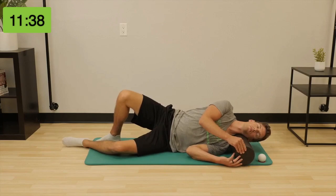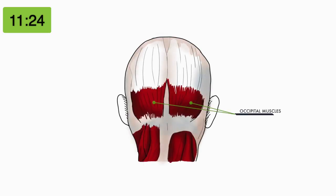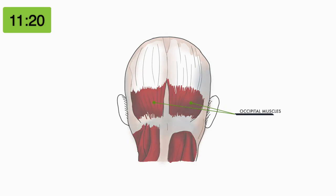A common headache that comes through my door is when someone paints across the forehead — commonly also associated with eye pain. The muscles typically causing this headache are actually on the backside of the head, called the occipital muscles. When the occipitals get extremely tight, they pull on the back of the head, over the top of the head, creating the tension and pressure you feel in the forehead.